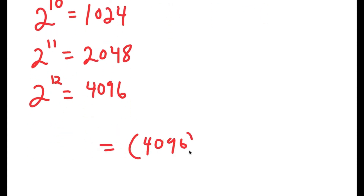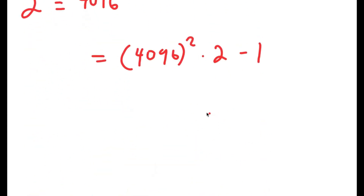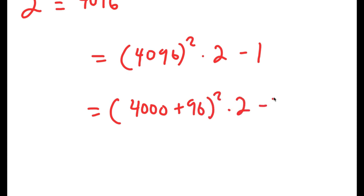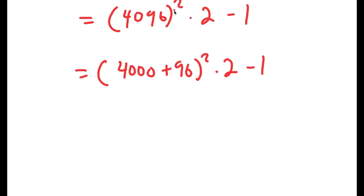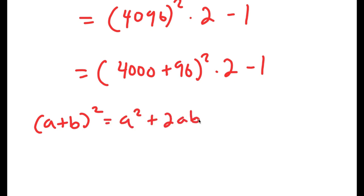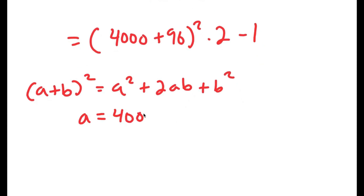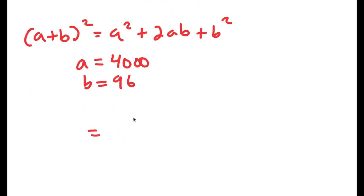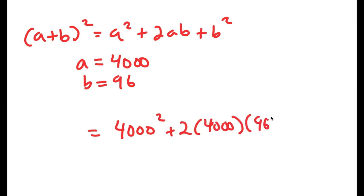So now I get 4096 squared times 2 minus 1. Now, 4096 squared is really hard to calculate by itself, so I'm going to rewrite this as 4000 plus 96, squared, times 2 minus 1. I can use the property (A + B)² equals A² plus 2AB plus B². In this case A is 4000 and B is 96, so this turns into 4000 squared plus 2 times 4000 times 96 plus 96 squared, all times 2 minus 1.